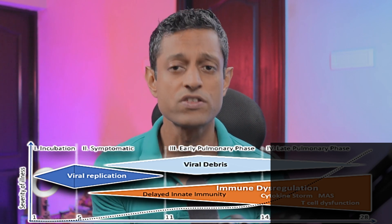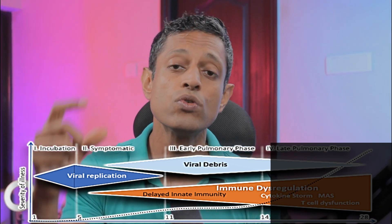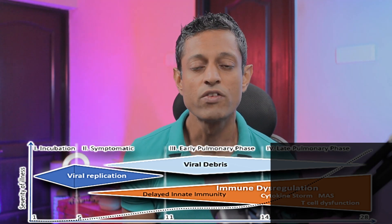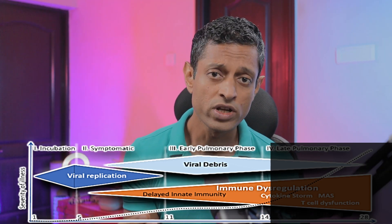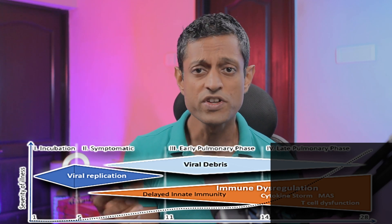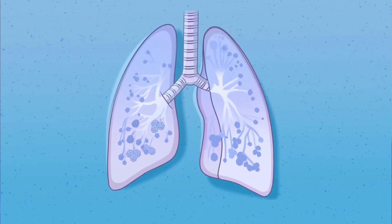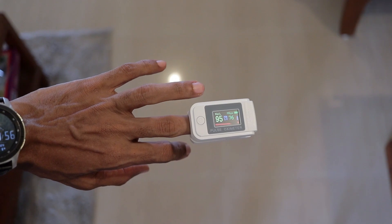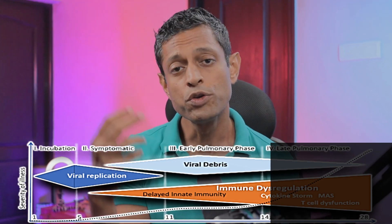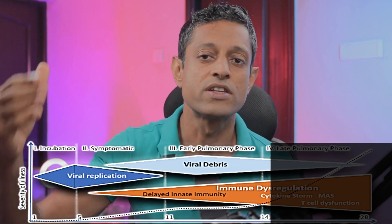It is important to get treatment at this phase so that you do not progress to the next phase, which is where you require oxygen either through invasive or non-invasive means. By non-invasive we mean an oxygen mask, and by invasive we mean things like a ventilator. The pulmonary phase denotes the starting or formation of a pneumonia, which could be mild, moderate, or severe. You would like to catch this pneumonia early before it spreads. In this phase you will get cough, difficulty in breathing, tightness in the chest, dropping oxygen saturation levels, and fever which you cannot control.